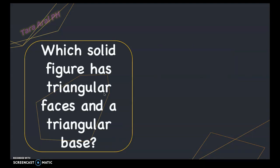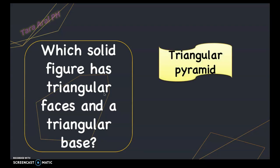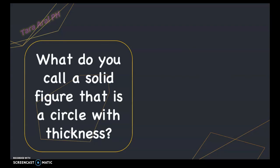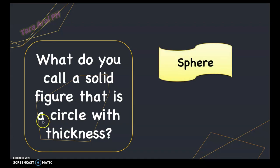Which solid figure has triangular faces and a triangular base? It has one base and the base is a triangle, and the faces are triangles, so it's a pyramid — specifically a triangular pyramid. Last one: what do you call a solid figure that is a circle with thickness? It's a sphere. Thank you for listening and I hope you understood our lesson.